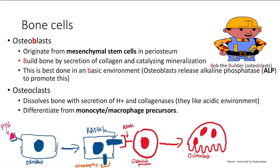Now let's go on to bone cells. Osteoblasts originate from mesenchymal stem cells in the periosteum, and osteoblasts build bone — like Bob the Builder, that big B. Bone building is done in a basic environment, and to facilitate this, osteoblasts release alkaline phosphatase to promote this basic environment.